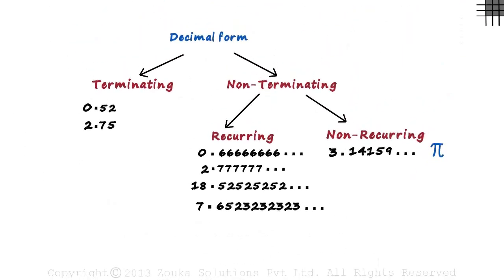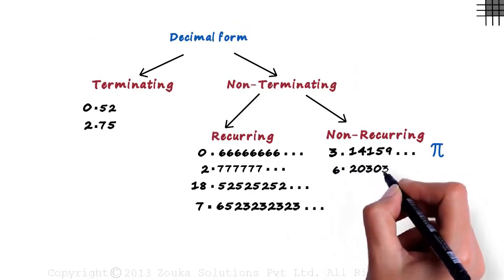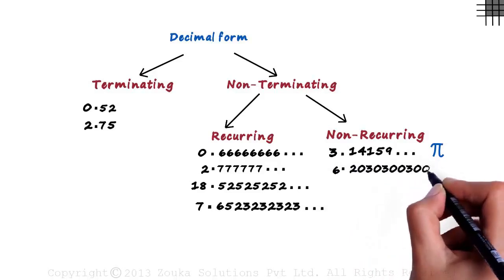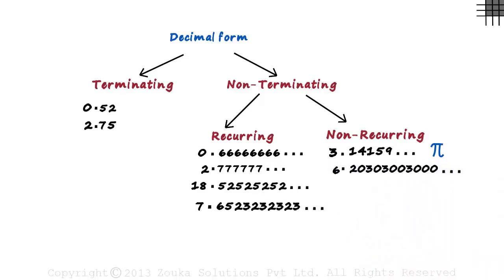You can even form non-recurring decimals on your own. Something like 6.20, 300, 300, 300, 300 and so on. There you go. You will not find any pattern here.